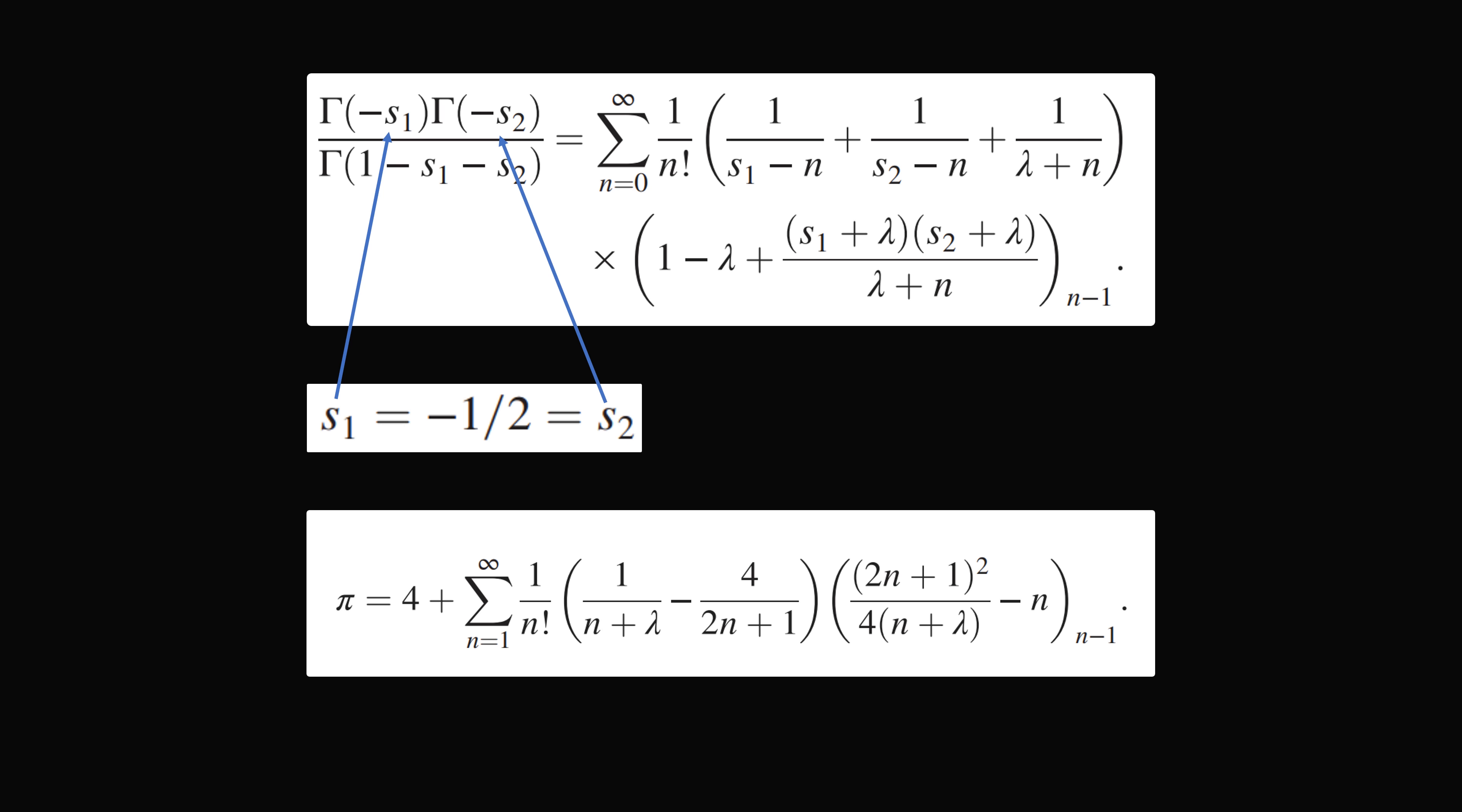s1 equals minus 1 half equals s2, and then you substitute those values in, you end up with a formula that pi is equal to the following.